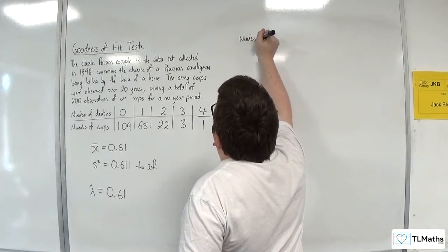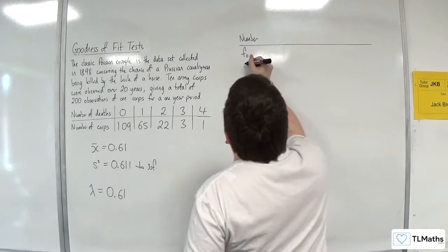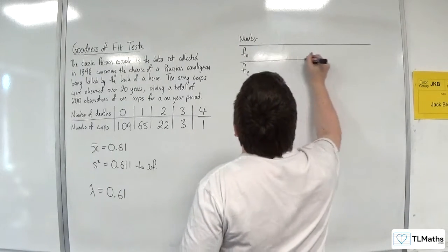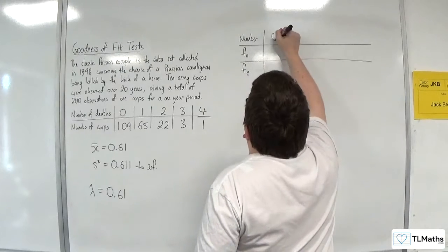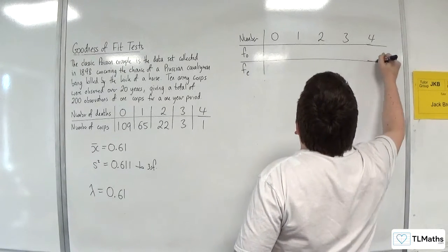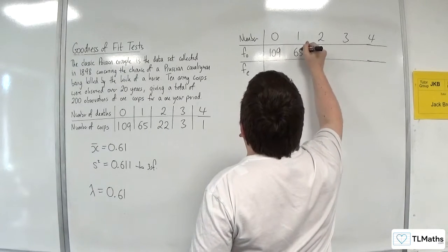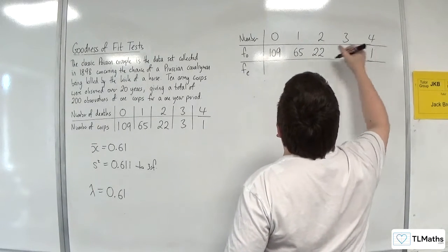Number and observed frequency. And we want expected frequency. 0, 1, 2, 3, 4. 109, 65, 22, 3, and 1.